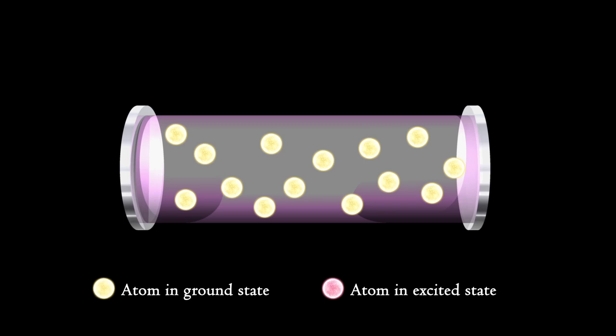A very important aspect is the fact that many atoms must be in an excited state. For laser to work, more atoms must be in an excited state than in lower energy states. This is called population inversion.